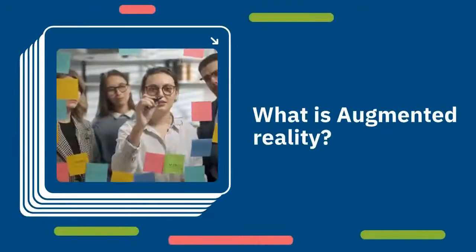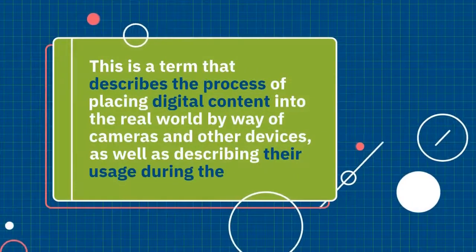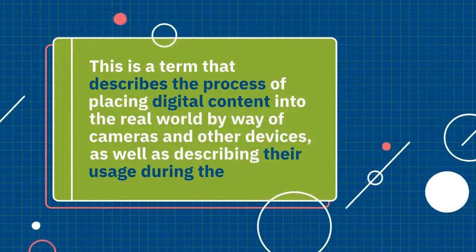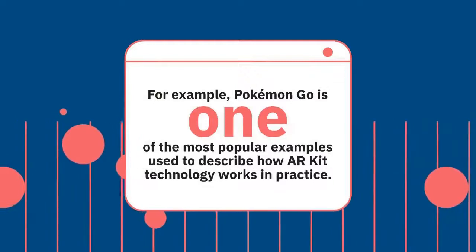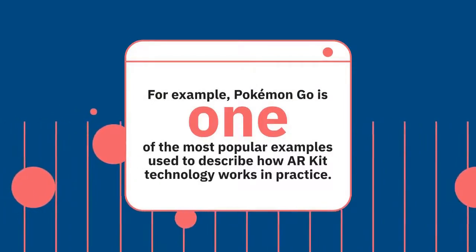What is augmented reality? This is a term that describes the process of placing digital content into the real world by way of cameras and other devices, as well as describing their usage during the implementation of this technique. For example, Pokemon Go is one of the most popular examples used to describe how AR technology works in practice.